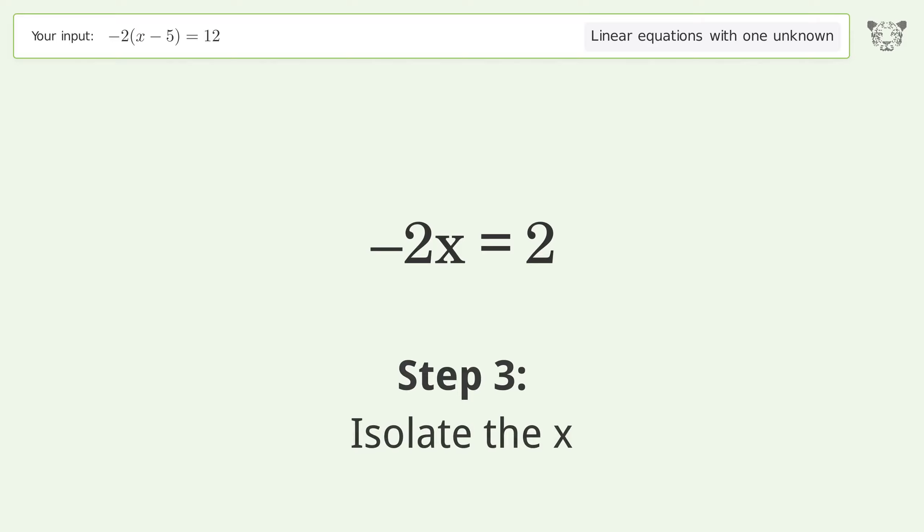Isolate the x. Divide both sides by negative 2. Cancel out the negatives.